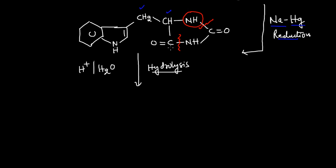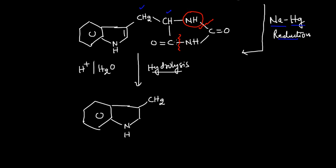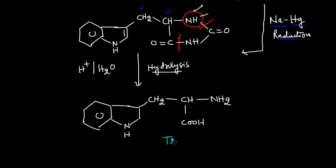On hydrolysis, the NH2 group and the acid part are formed. On hydrolysis, the cleavage of the bond takes place — the CH part with NH gives NH2, and the other part converts into the acid group (COOH). Finally we get the structure with NH, CH2, and the acid group. This is the formation of Tryptophan amino acid.